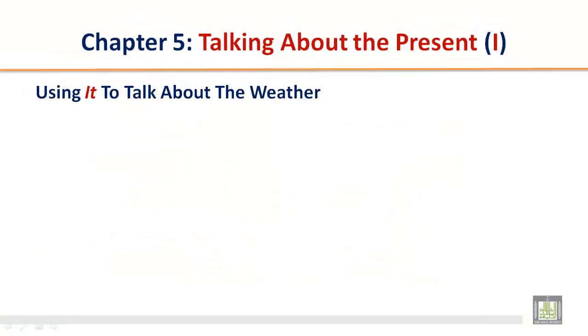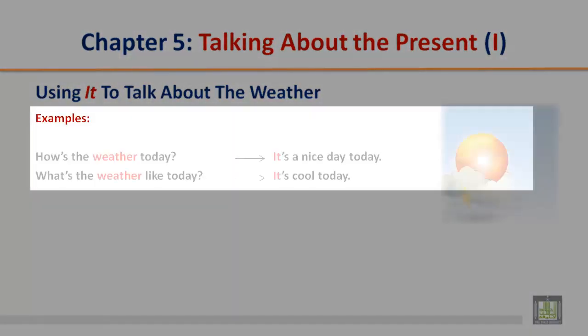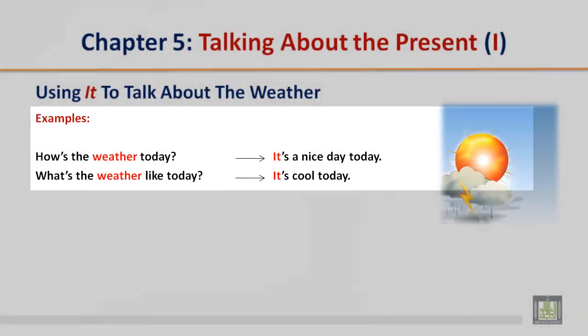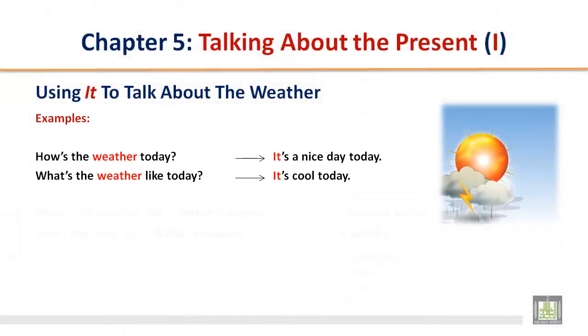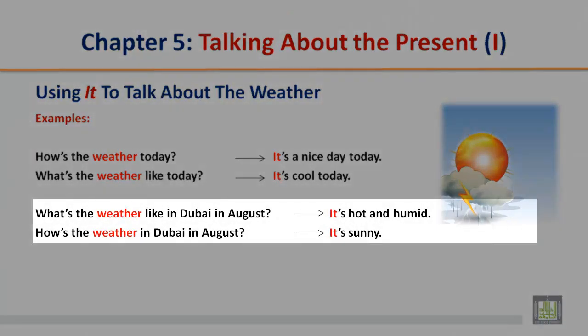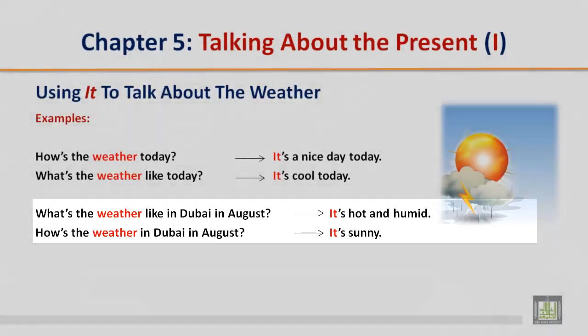Using 'it' to talk about the weather. Examples: How's the weather today? It's a nice day today. What's the weather like today? It's cool today. What's the weather like in Dubai in August? It's hot and humid. How's the weather in Dubai in August? It's sunny.